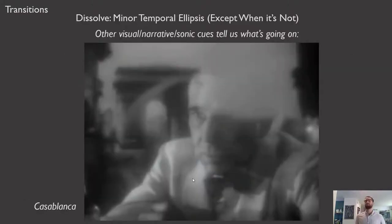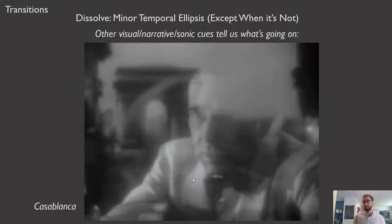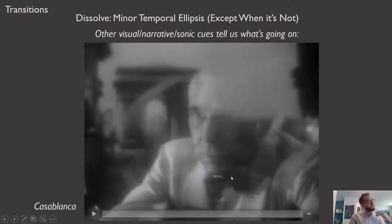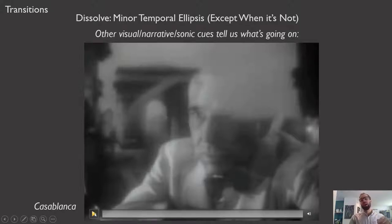Part of understanding classical continuity editing is understanding that there are exceptions that are still more or less classical. Check out this use of a dissolve in Casablanca, which isn't exactly a minor temporal ellipsis — and in fact I know that you know exactly what it is even if you haven't seen this film.